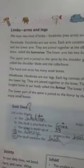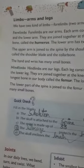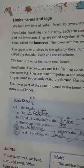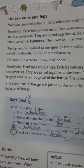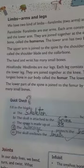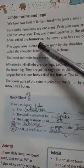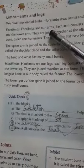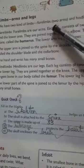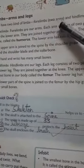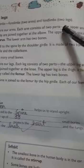In today's video we will see more details of the skeletal system. Let's start with the limbs, which are also part of the skeletal system. Limbs are nothing but our arms and legs. We have two kinds of limbs: forelimbs, meaning two arms, and hind limbs, meaning two legs.